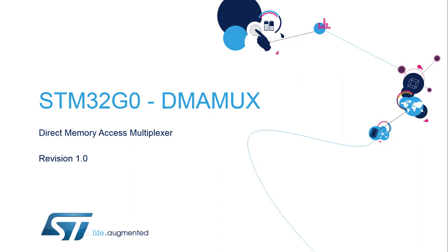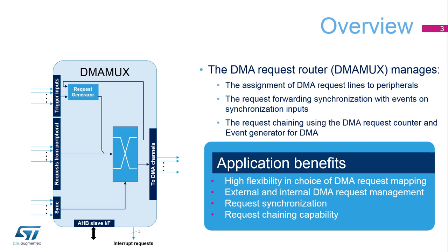Welcome to the presentation of the STM32-G0 DMA Request Multiplexer, called DMA-MUX. It covers the main features of this module. The DMA-MUX Request Multiplexer allows routing a DMA request line between the STM32-G0's peripherals and its DMA controllers. The routing function is ensured by a programmable multi-channel DMA request line multiplexer.